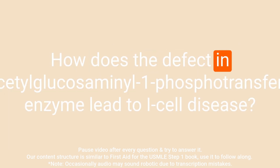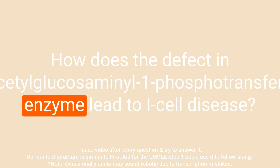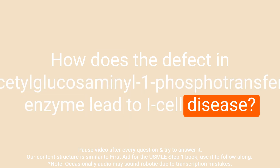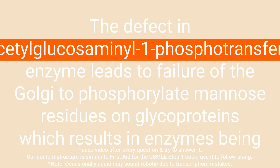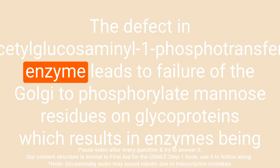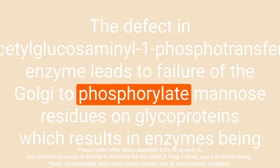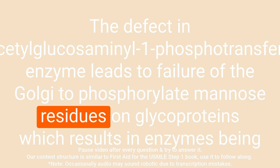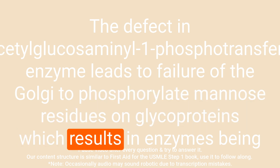Question: How does the defect in N-acetylglucosaminyl-1-phosphotransferase enzyme lead to I cell disease? Answer: The defect in N-acetylglucosaminyl-1-phosphotransferase enzyme leads to failure of the Golgi to phosphorylate mannose residues on glycoproteins,